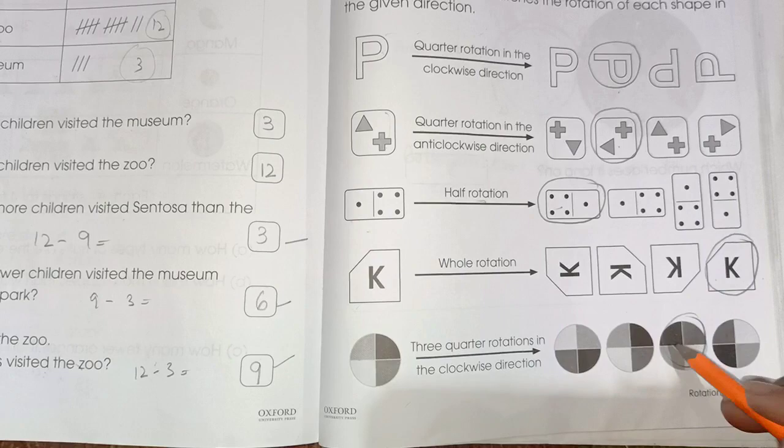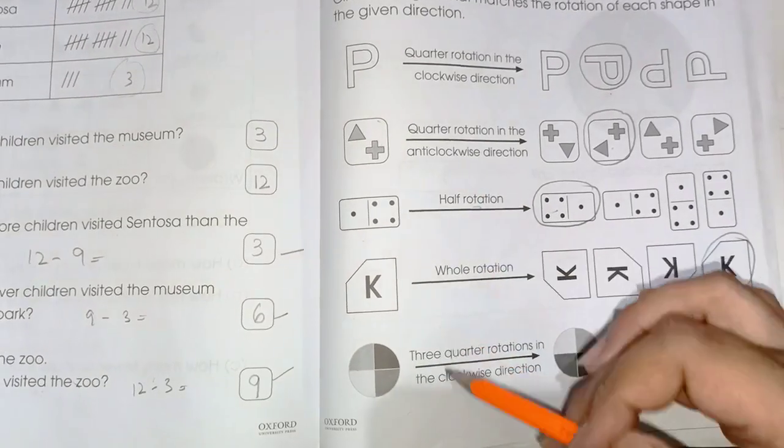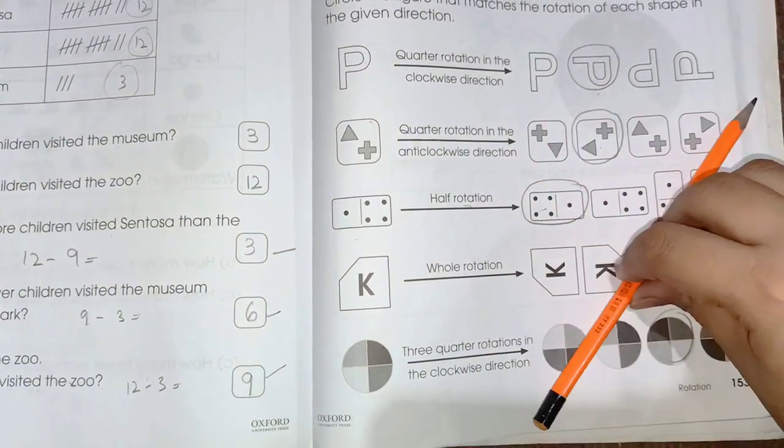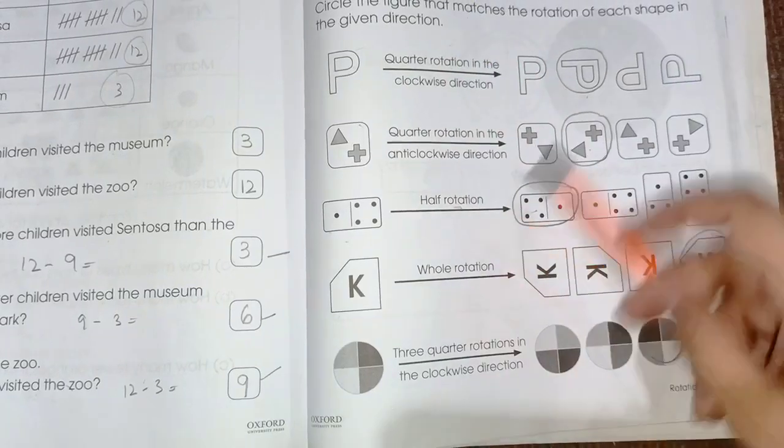Three-quarter rotate means this shape. You can draw the shape on paper and then rotate it according to the mentions.